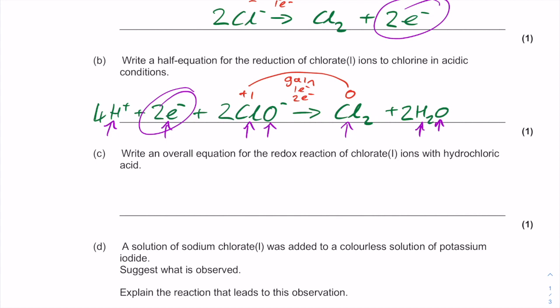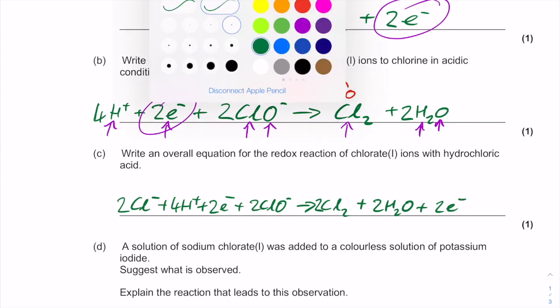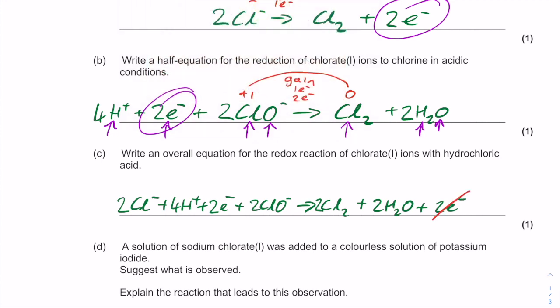So we'll start with this: we'll do 2Cl⁻ from the top equation plus 4H⁺ plus 2e⁻ plus 2ClO⁻ makes Cl₂, but there's two of them because one on both lines, plus 2H₂O plus 2e⁻.